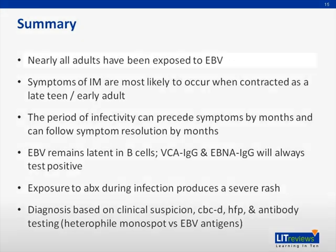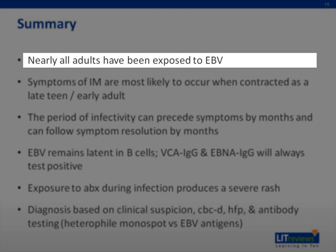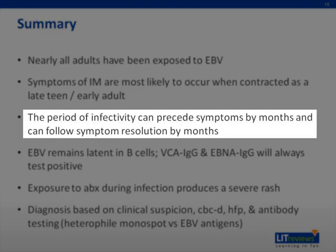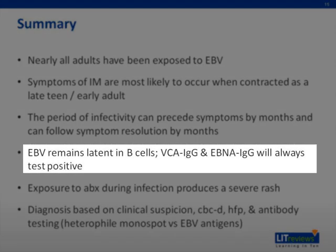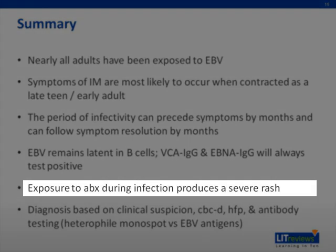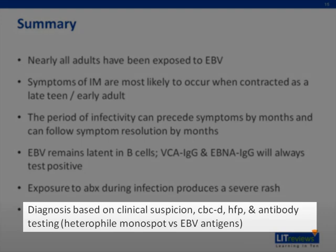A couple of key take-home points: Nearly all adults have been exposed to EBV, and symptoms of mono most likely occur when a patient is exposed during their late teen or early adult years. The contagious period can precede symptoms by months and follow their resolution by months. EBV remains latent inside B cells, so VCA IgG and EBNA IgG will always test positive. Exposure to any penicillin during infection frequently produces a severe rash. Diagnosis is based on CBC, hepatic function panel, the heterophile monospot test, and the EBV antibody panel.